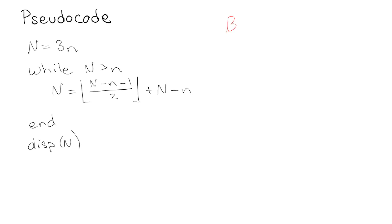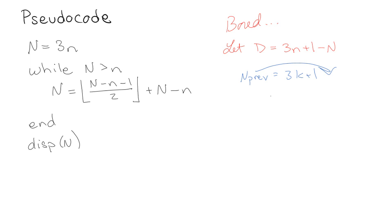Let's say we're going to let D be equal to 3n + 1 minus n. Where that comes from is our previous expression where n_previous equals 3k + 1 — we're just moving that over and setting the whole thing equal to a new variable D. So assuming D = 3n + 1 - n, that means n is going to be equal to 3n + 1 minus D. Now we're going to rewrite everything in terms of D.